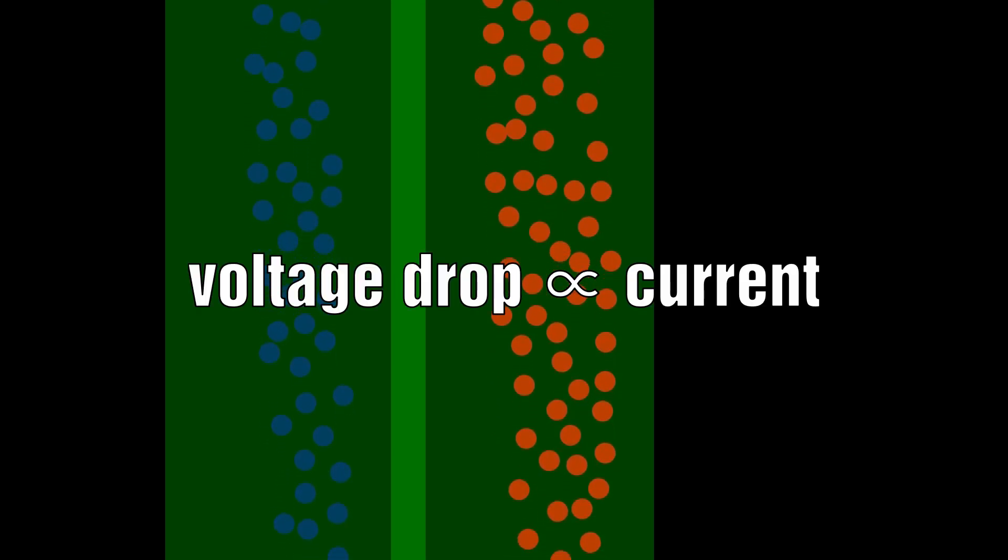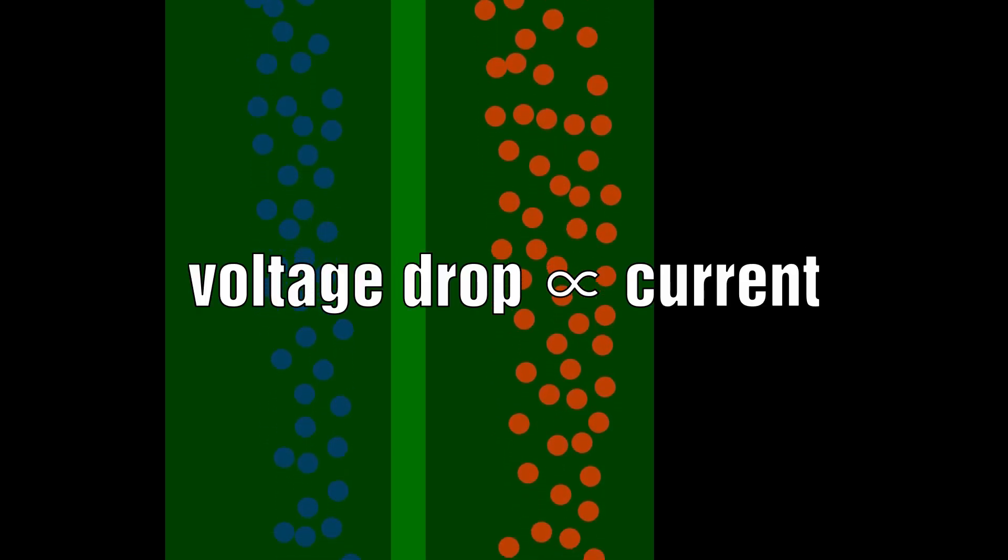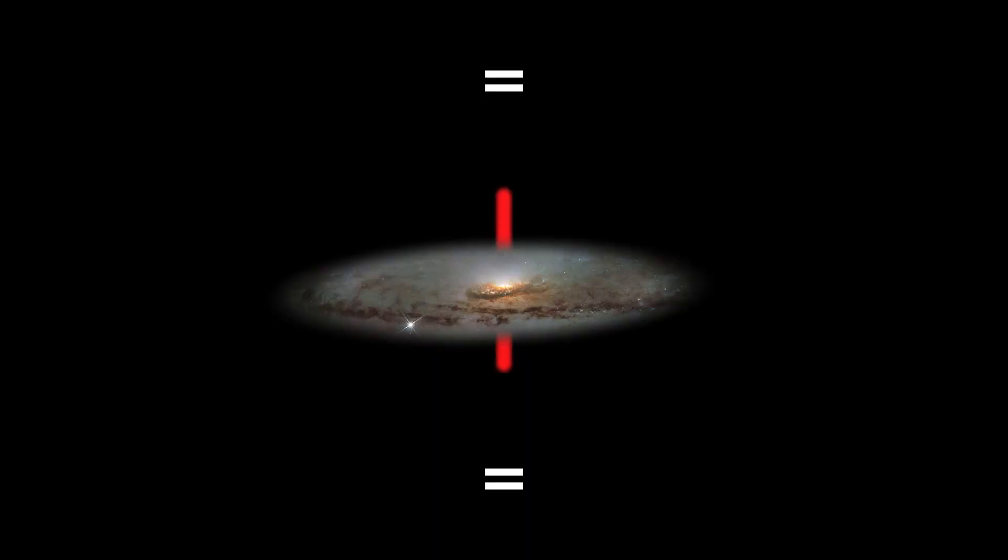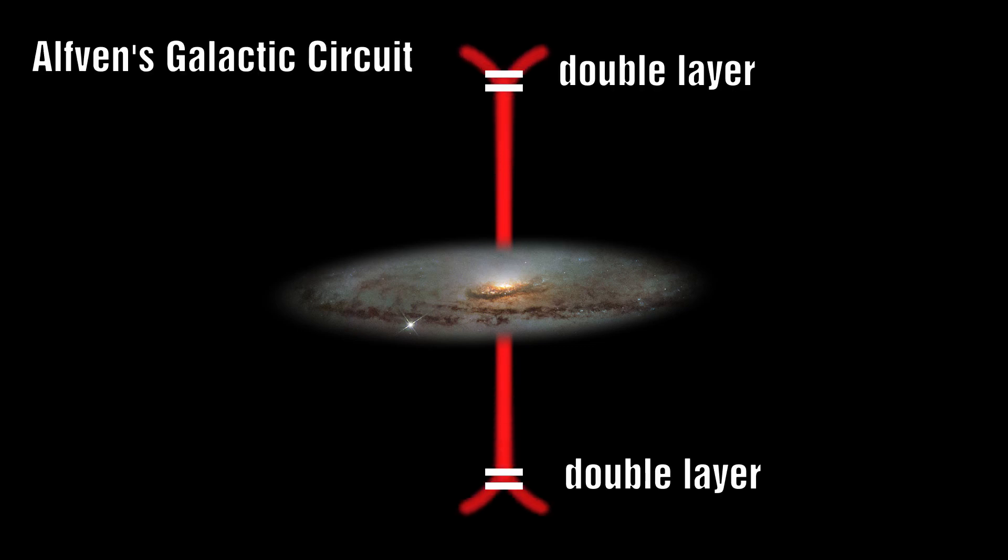The instantaneous voltage drop across a current carrying double layer is proportional to the current and is similar to that across a resistive load. This means that double layers are able to dissipate vast amounts of energy, but this energy must be supplied via the incoming current.